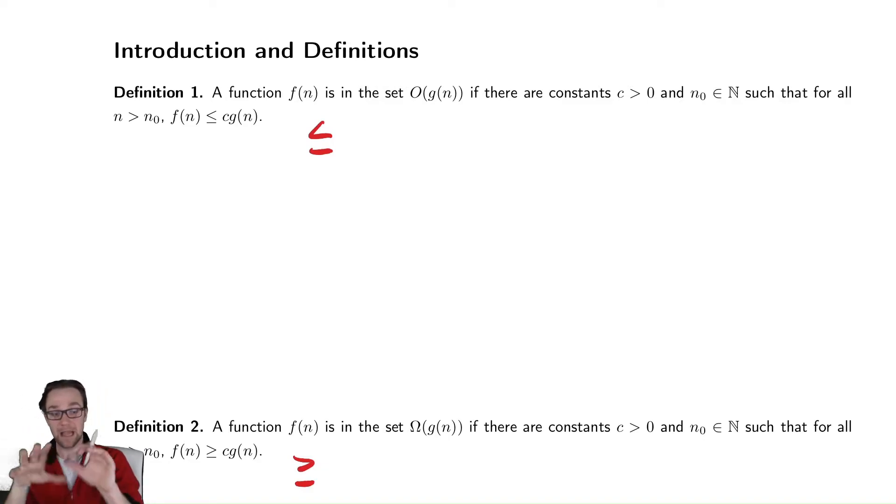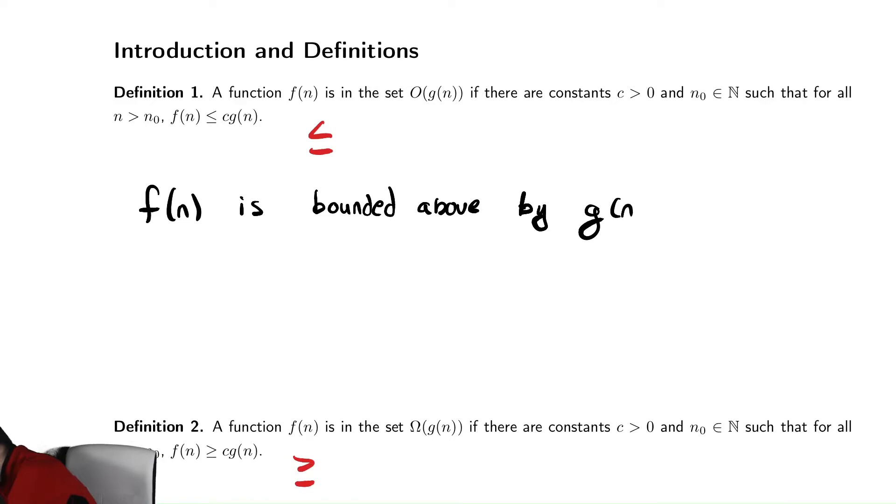You're trying to say that something happens eventually. So what we want to be able to say is that f(n) is bounded above by some other function, g(n), with the hope being that that g(n) function is a more convenient thing to deal with and to talk about and to compare to other things.